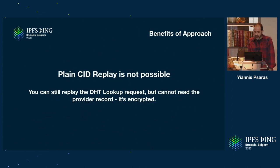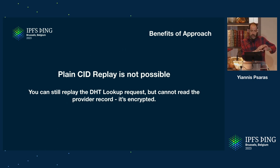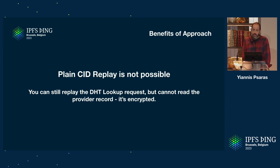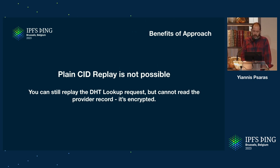What are the benefits? The plain CID replay is not possible right now — if you're participating in the DHT as a server, or sniffing traffic, you can see which CID is being requested, request it yourself, and associate the requestor with the CID. You can see what content someone is getting and who they're getting it from. Everything is in the open. With this new approach, you can still replay the request, but you cannot read the provider record because it's encrypted, and therefore you cannot find out what the person is looking for.